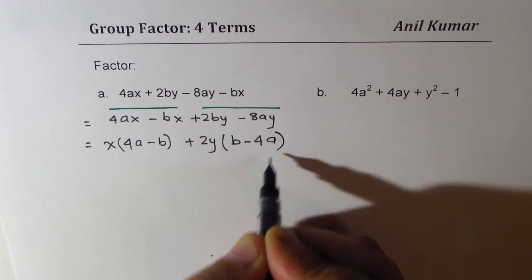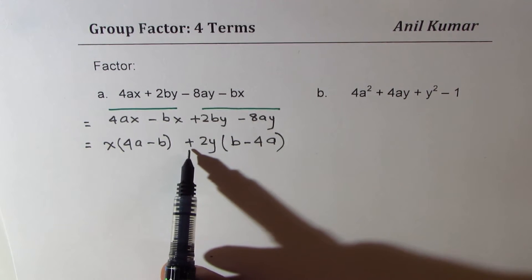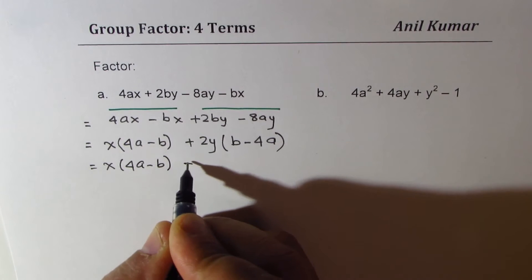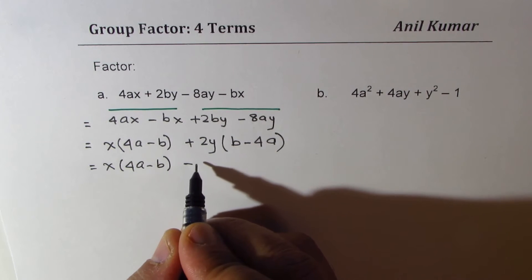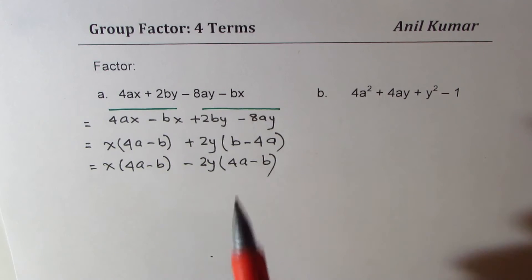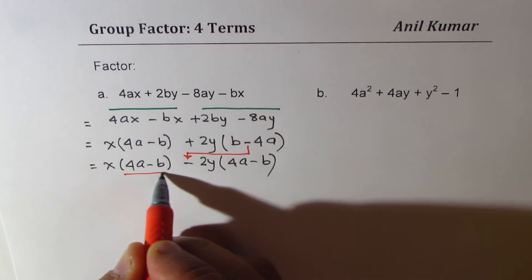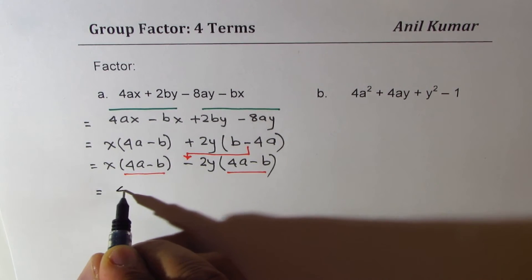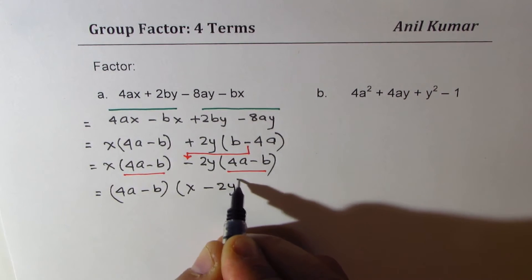You can see that 4a minus b and b minus 4a — one is the negative of the other, so we need to change this sign. This is a very critical step. We'll rewrite it as 4a minus b, making the second group negative — as if we are factoring out a minus. So it becomes minus 2y times 4a minus b.